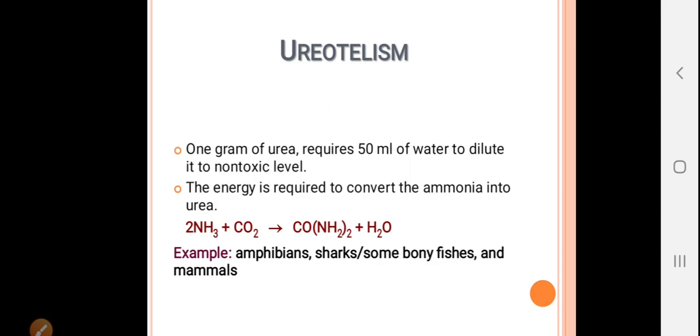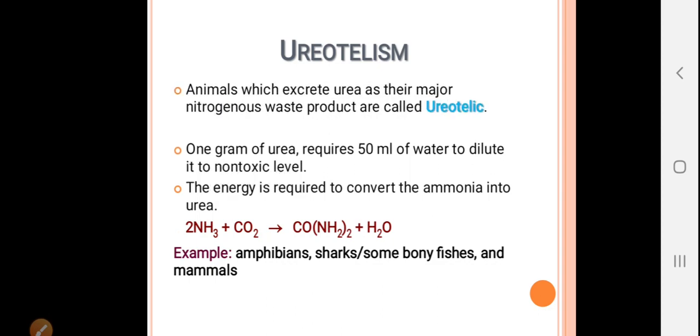Urotelism: What does urotelism mean? Animals who excrete their nitrogenous waste in the form of urea are called urotelic. One gram of urea requires 50 ml of water.